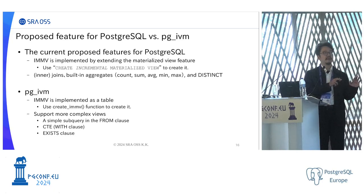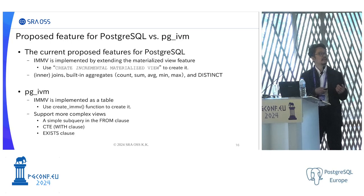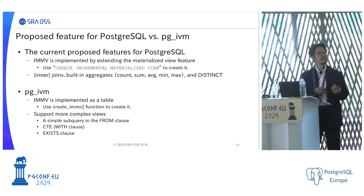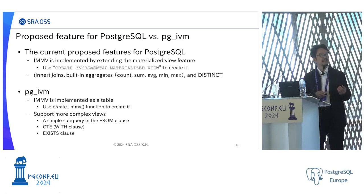There are some differences between the patch proposed for the PostgreSQL core and PGIVM. The patch set proposes the IVM feature as part of the materialized view, created with a create materialized view command, supporting inner joins, filtering, and aggregates such as count, sum, average, min, and max, plus the distinct clause. On the other hand, PGIVM is implemented as a table because an extension module cannot modify the actual materialized view internals. A create_immv function is provided to create the view.